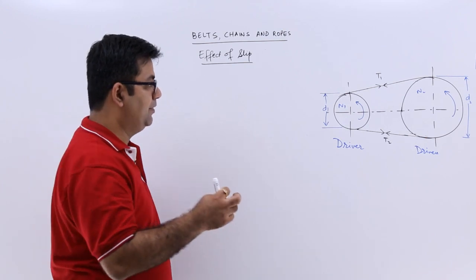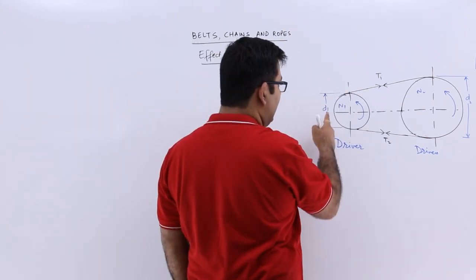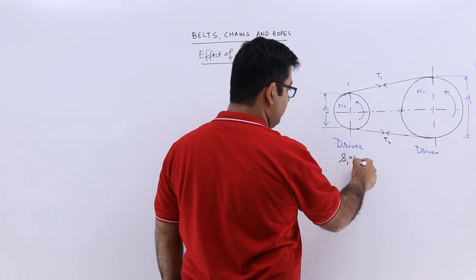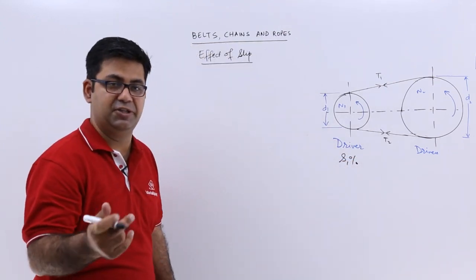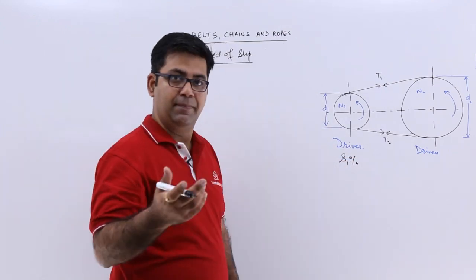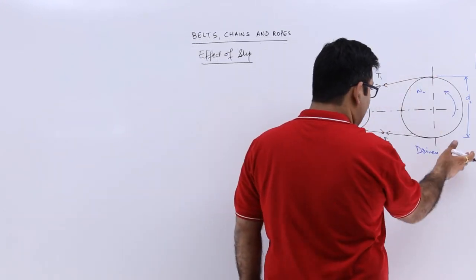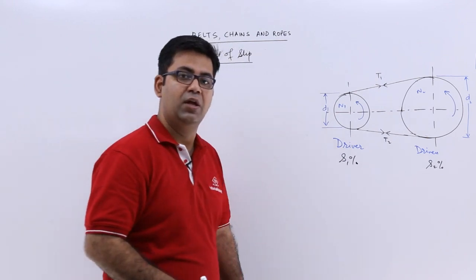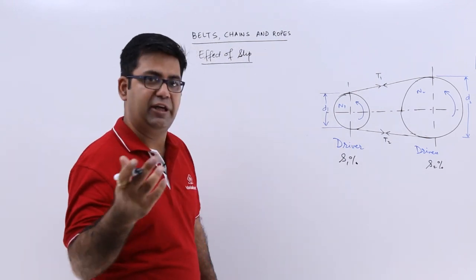Let us say that the slip in between the belt and the driver is s1 percent, where slip is given in percentage, and the slip between the belt and the driven is s2 percent.